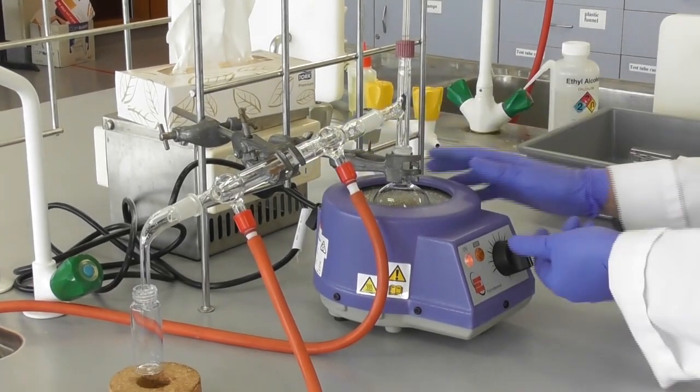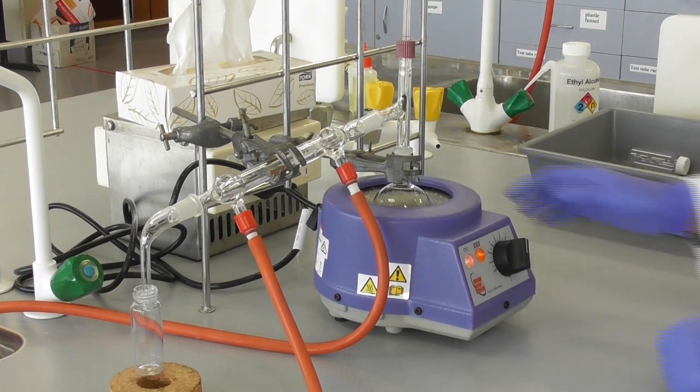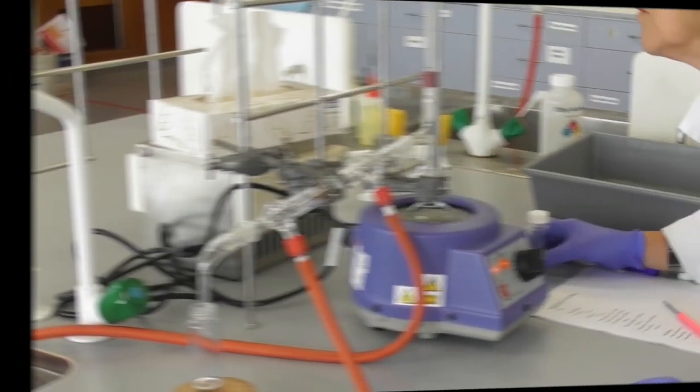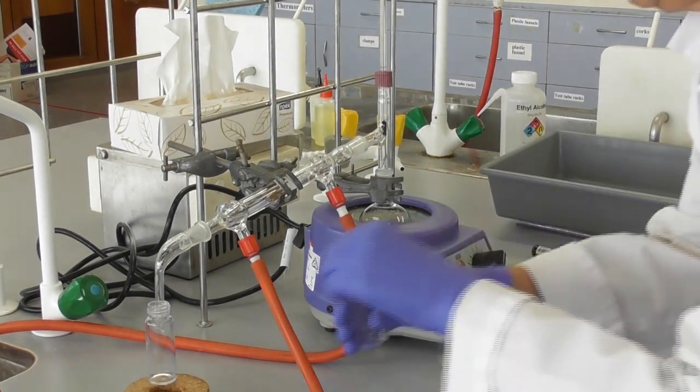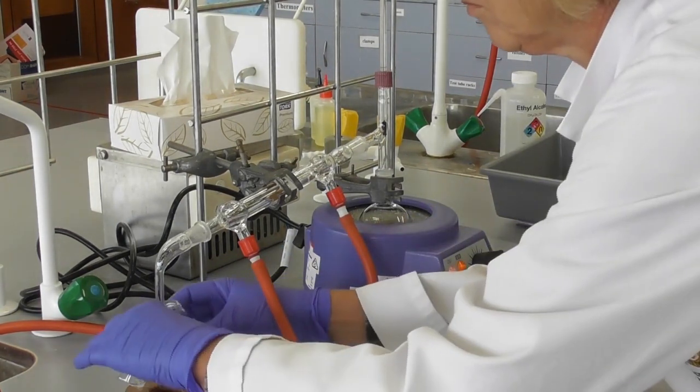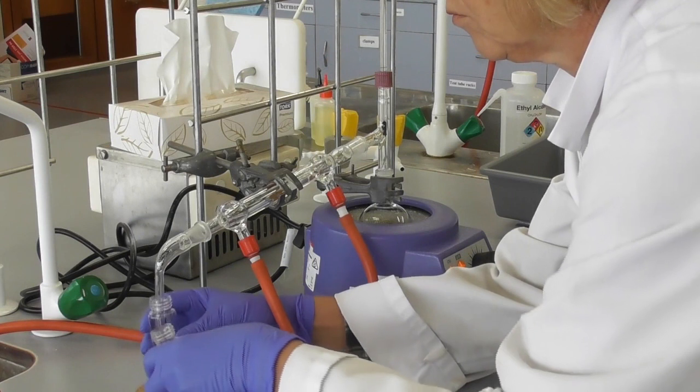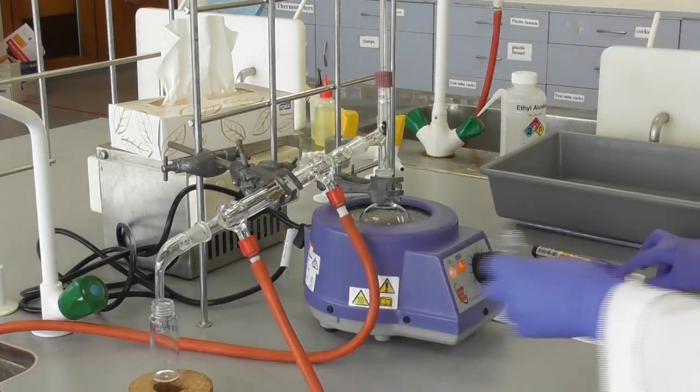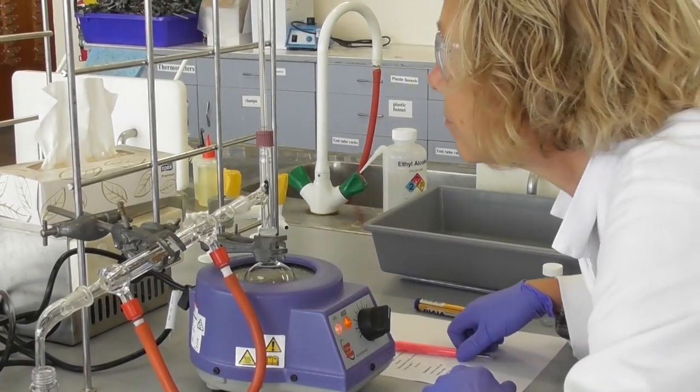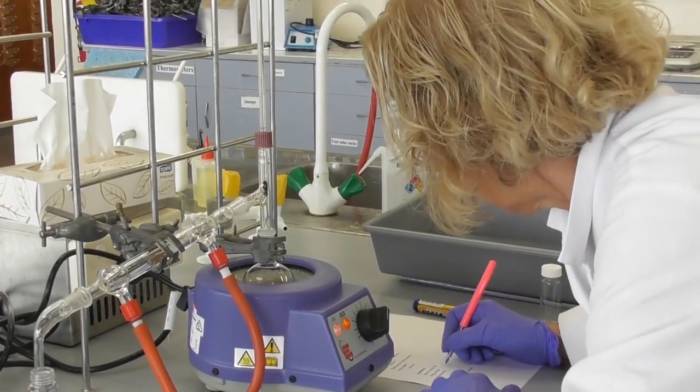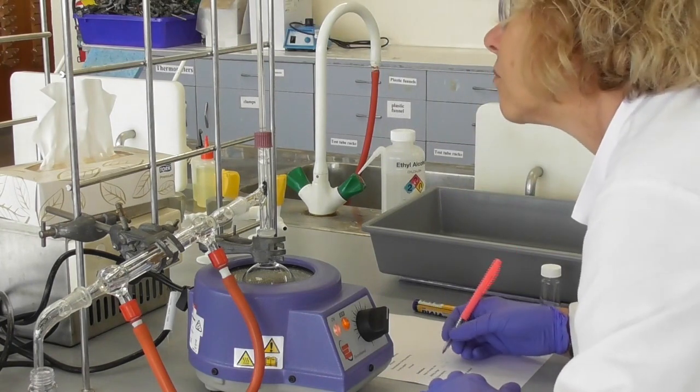Now we can start the distillation by turning on the heating metal. Once we reach the boiling range we swap the vials over and start collecting our product. We watch the temperature and make note of the temperature range of the distillation.